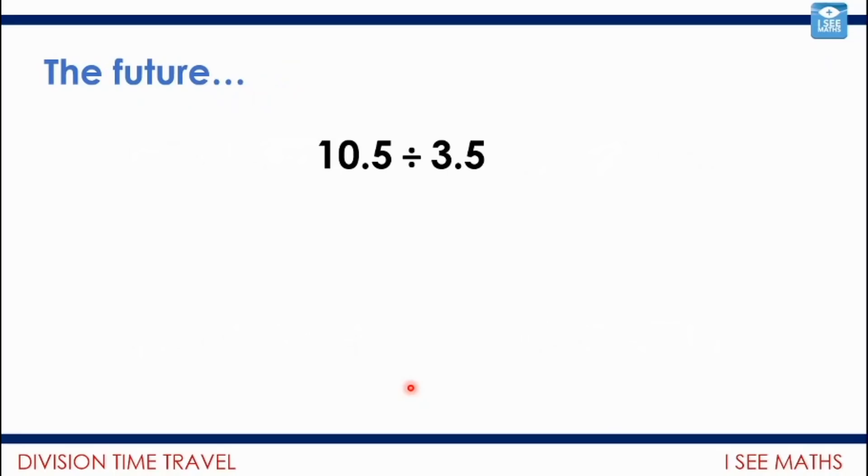Now I always remember giving some children in my year 6 class this question and them really puzzling over it, thinking well 10.5 divided by 3.5, wow that's a difficult question, until we realize what we're just trying to calculate is, well how many 3.5s are there in 10.5? Just count up in 3.5s and then we might recognize actually the answer, it's just 3.